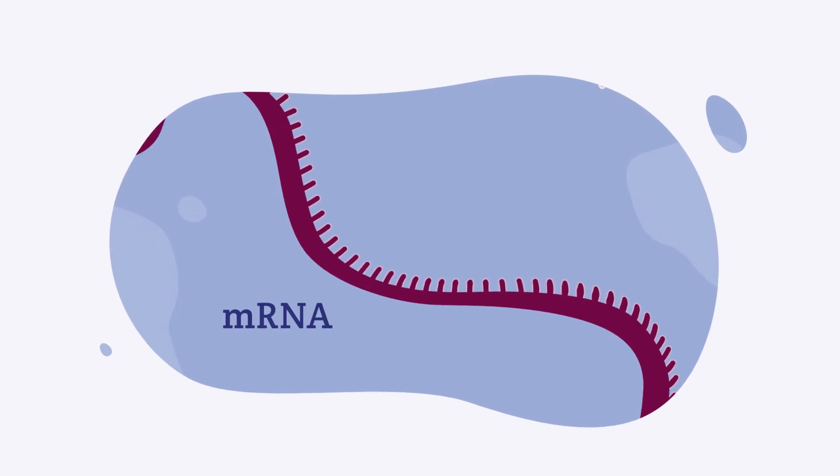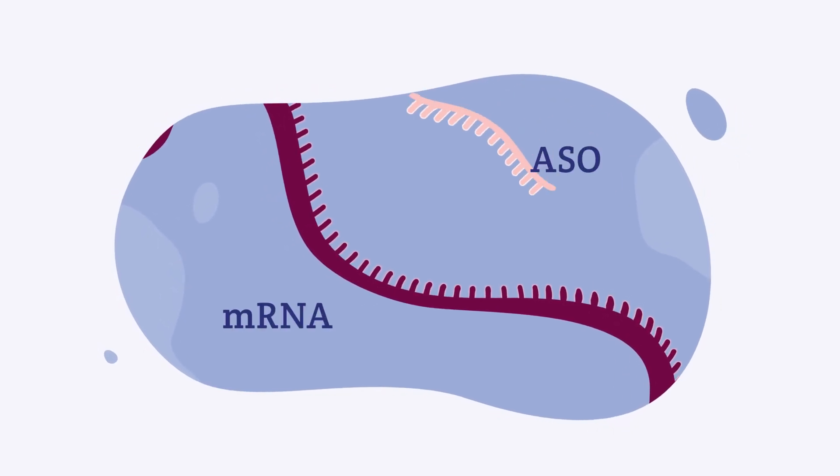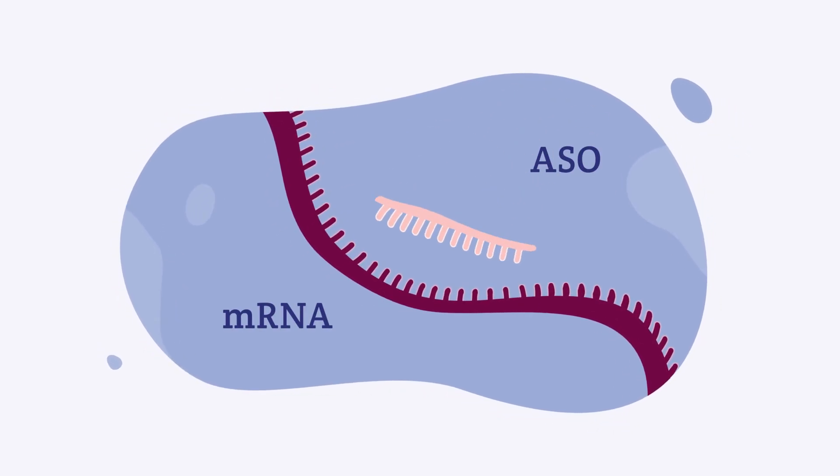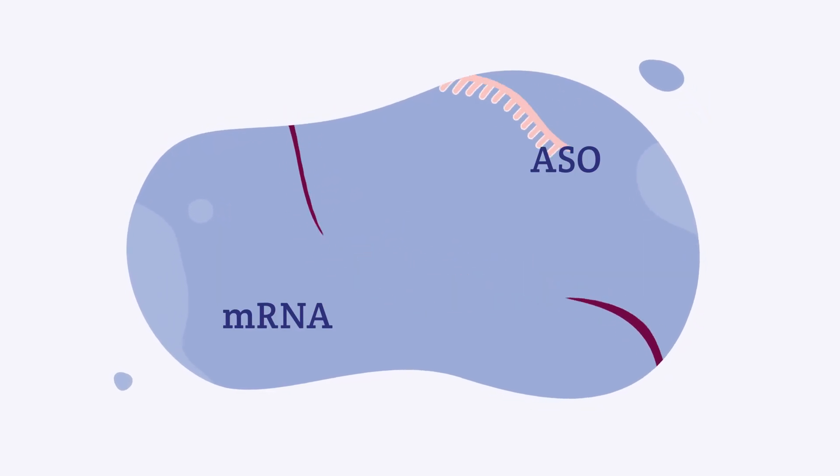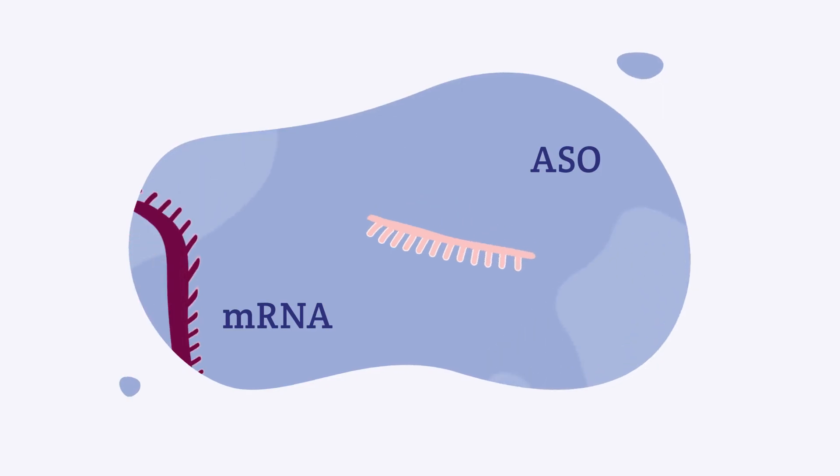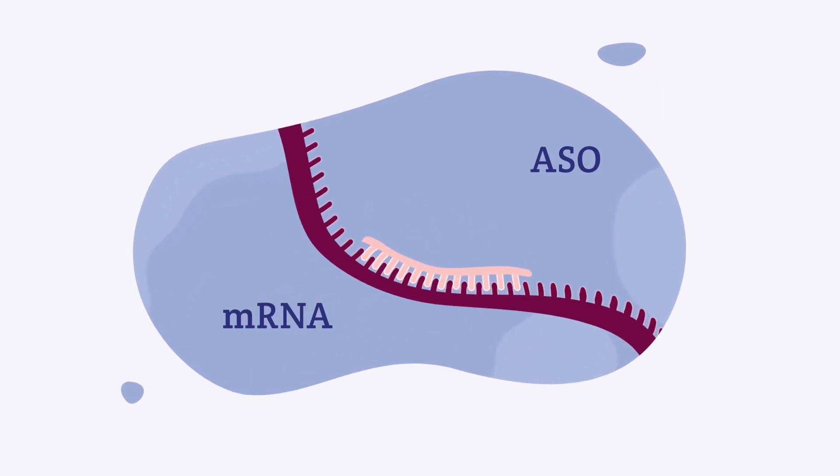ASO is a very short sequence of RNA or DNA that can be delivered to cells to change how a protein is produced. These stay in the cell for a limited duration and may need repeated doses to maintain a therapeutic effect.